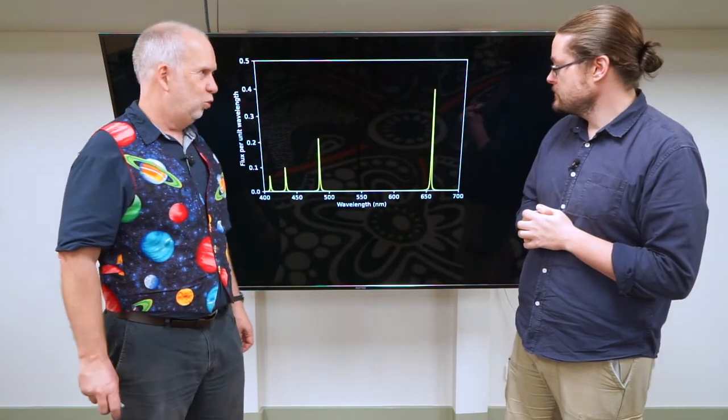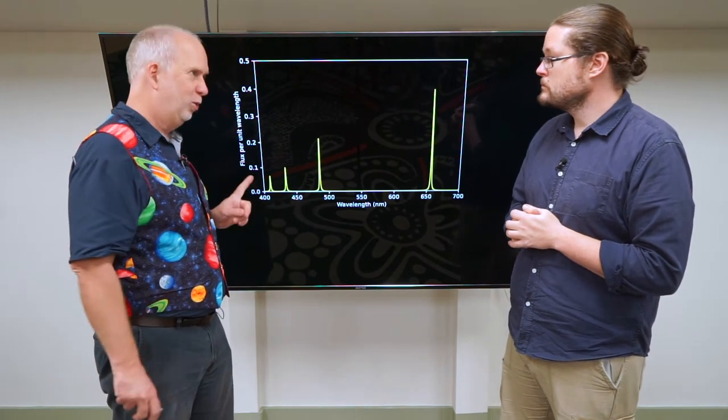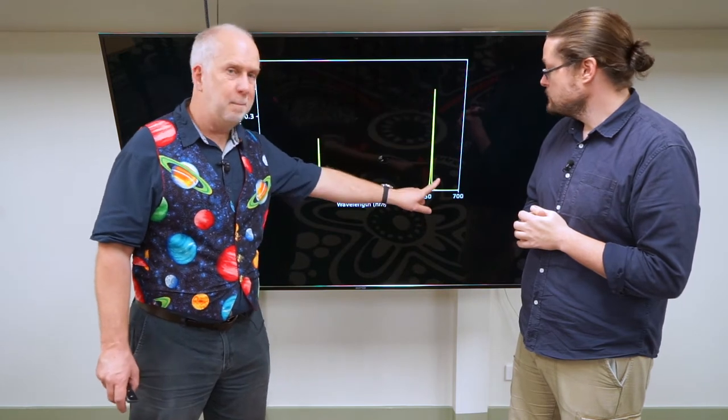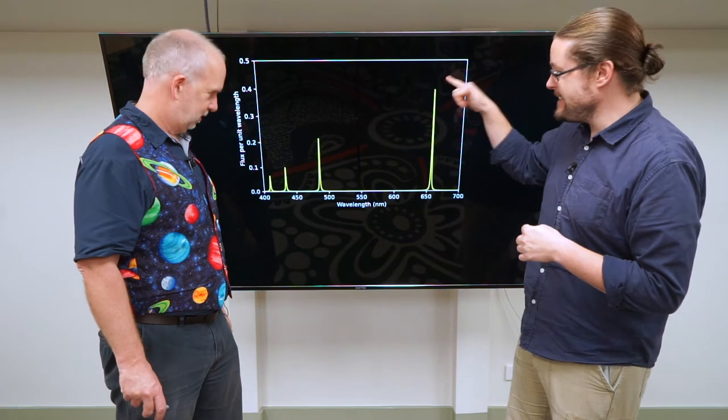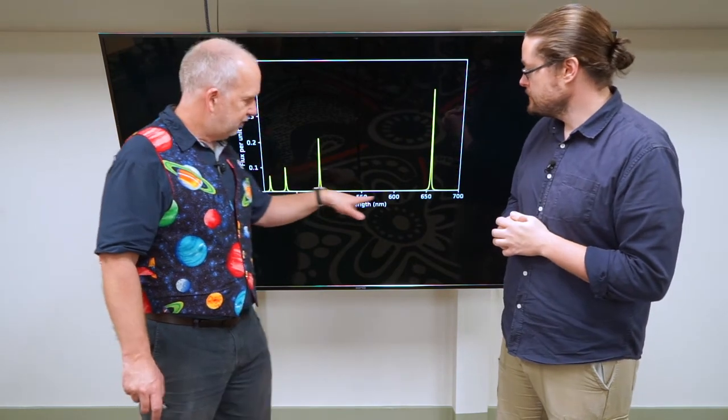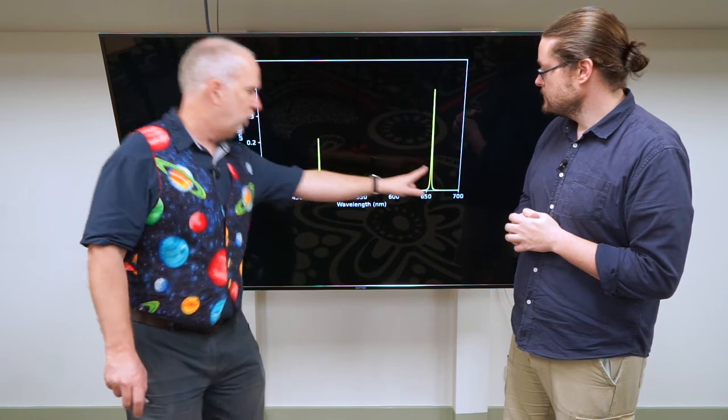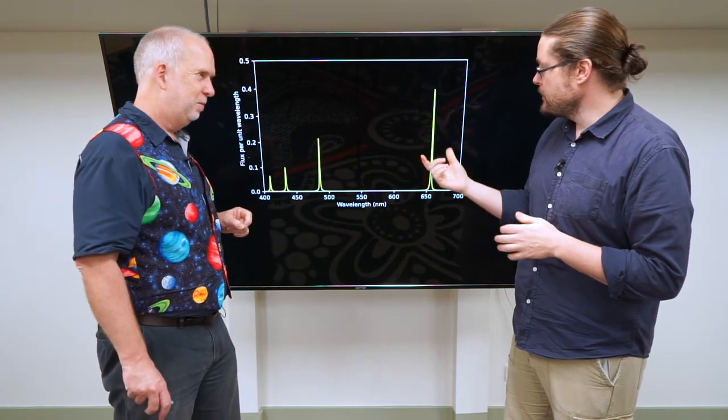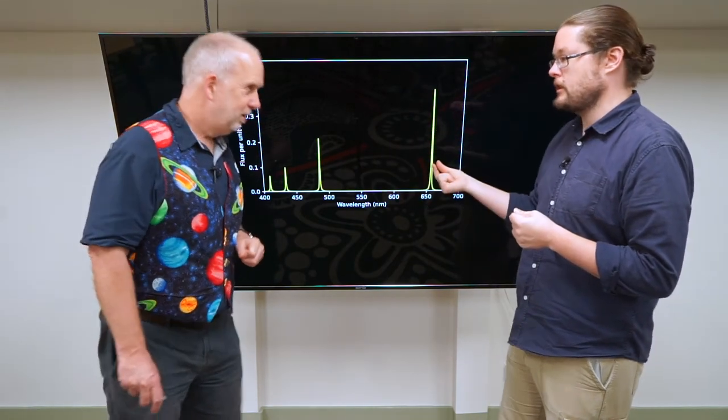For example, if you take hydrogen gas and heat it up or pass electricity through it, this is the spectrum you'll get. You'll see there's a spike here - that's called an emission line, because it's being emitted as light. There's nothing in between, so you're only getting light at this wavelength and that wavelength, but nothing in between. You would see different colors, but just very narrow, specific colors.